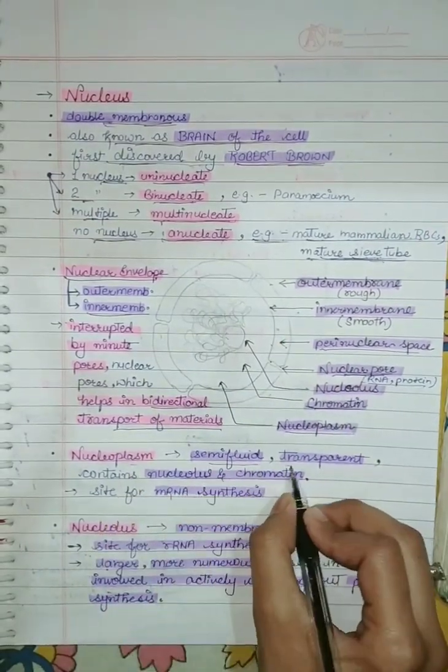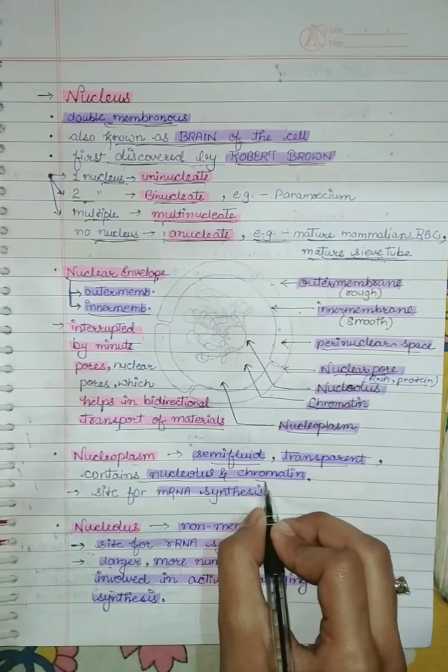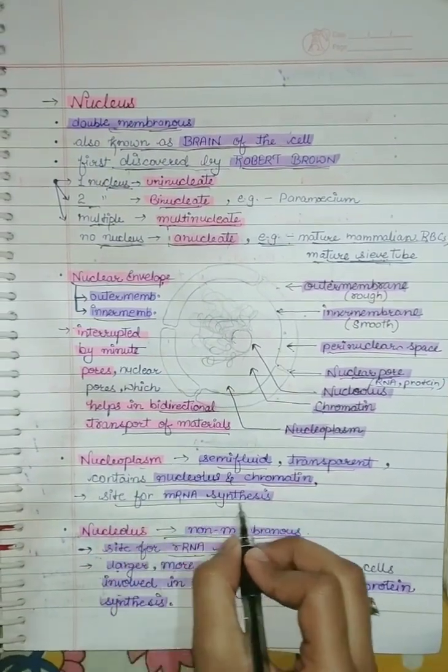Nucleoplasm is semi-fluid in nature. It is transparent. It contains nucleolus and chromatin. Nucleoplasm is the site for mRNA synthesis.